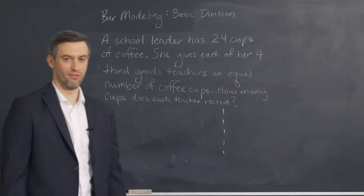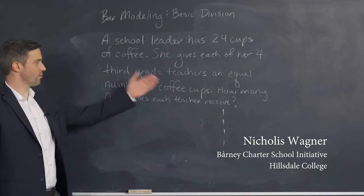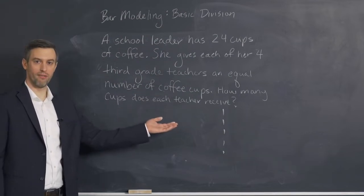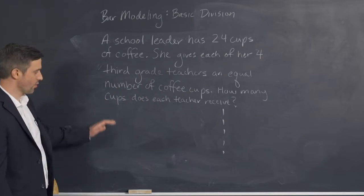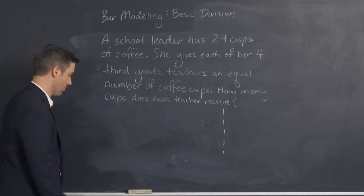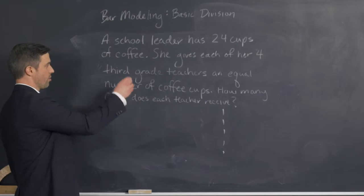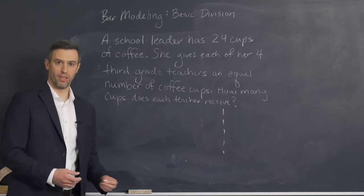Now we're going to do a basic division bar model. We're going to first start by reading through the problem all the way through so we have an idea of where we're going. Then we're going to restate the question in the form of a sentence to finalize what it is that we're looking for. We make it very clear, and then we're going to go back through, read and stop and draw when we can.